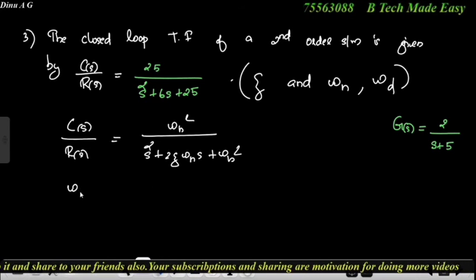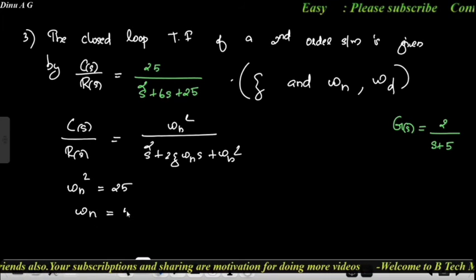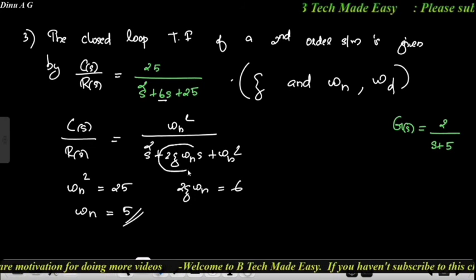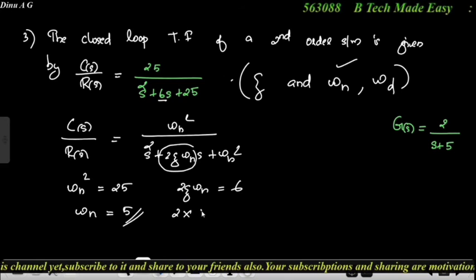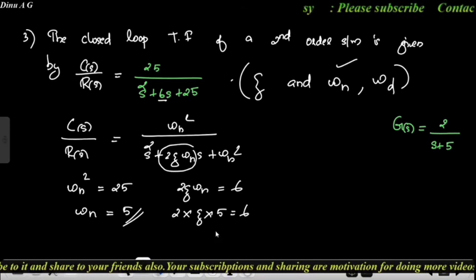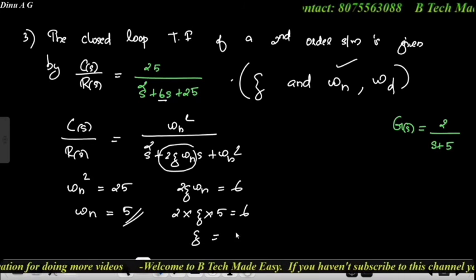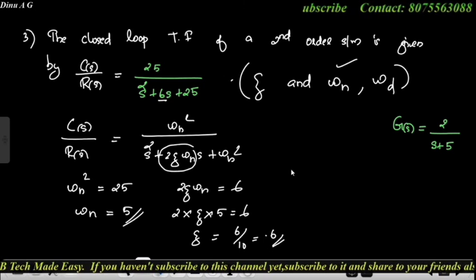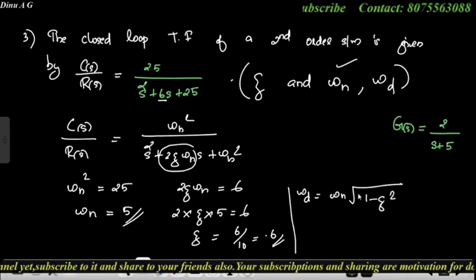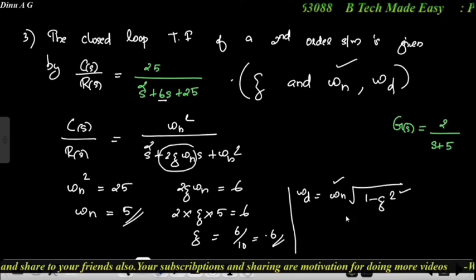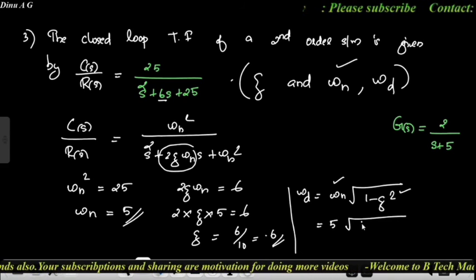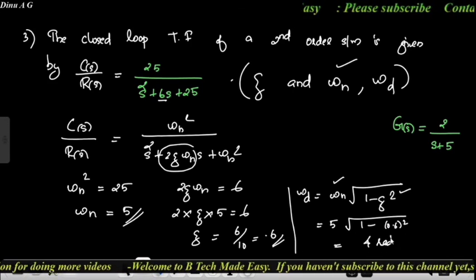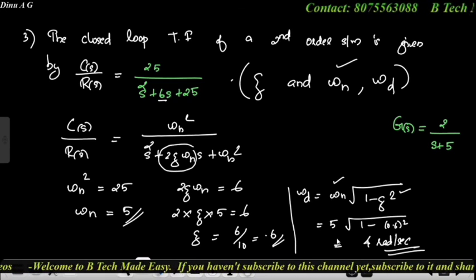Comparing: ωn² = 25, so ωn = 5. Then 2ζωn = 6, so ζ = 6/(2×5) = 6/10 = 0.6. Damped natural frequency ωd = ωn × √(1 − ζ²) = 5 × √(1 − 0.36) = 5 × √0.64 = 5 × 0.8 = 4 radians per second.